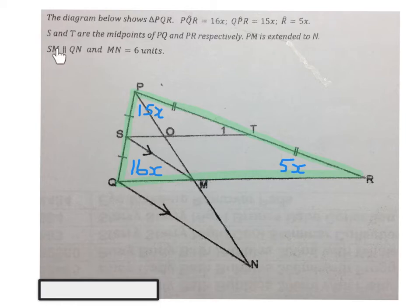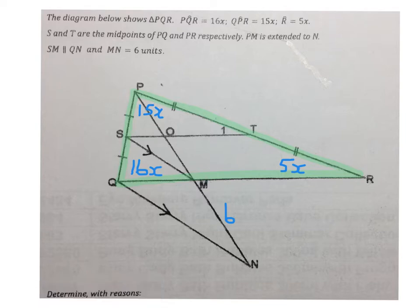SM is parallel to QN. They did indicate it on the sketch for us, and they said MN is 6 units. All this information must now help us to find the answers. At the bottom here they say determine with reasons, and they gave us four questions that we will now answer.